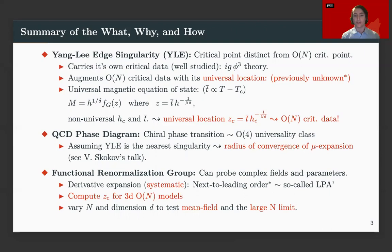So the way that we could see this is by looking at the universal magnetic equation of state. Variable t-bar here is going to be related to just the difference from tc. So here M is equal to h to the 1 over delta, where delta is one of our critical exponents, times some scaling function fg of z. So z here is some combination of t, t-bar, and h.